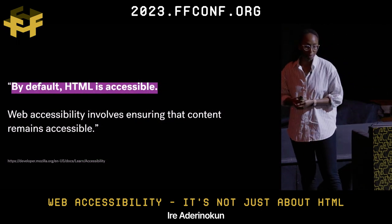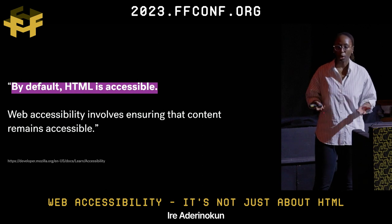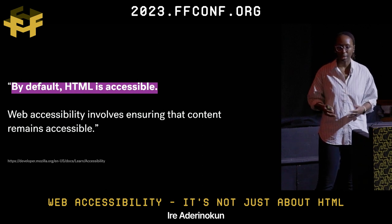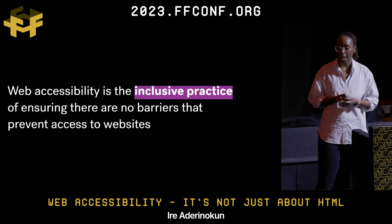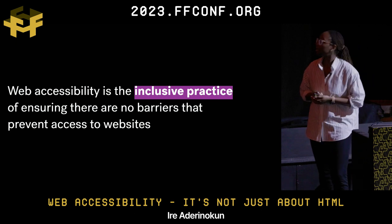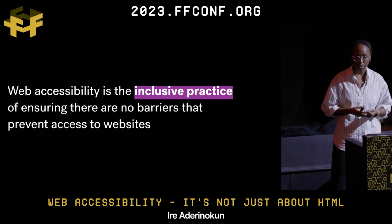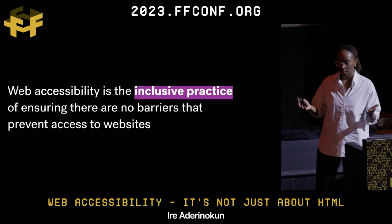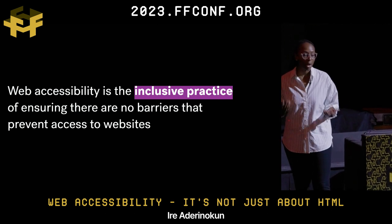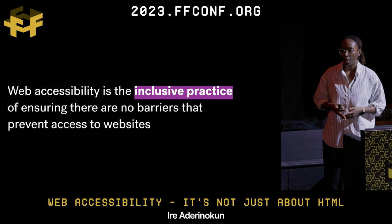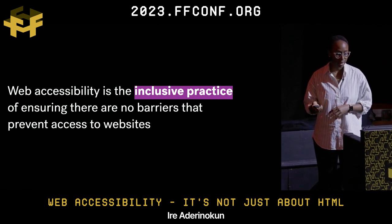You may have heard this before, but by default HTML is accessible. A lot of the work of web accessibility is more about ensuring that it actually remains accessible. Broadly speaking, we can define web accessibility as the inclusive practice of ensuring there are no barriers that prevent access to websites — making websites accessible for everyone. When we think about accessibility, it's really important to think about three groups of people because they have quite specific access needs.